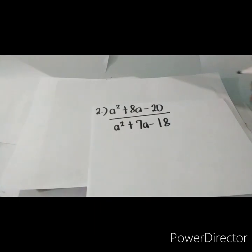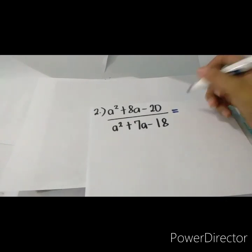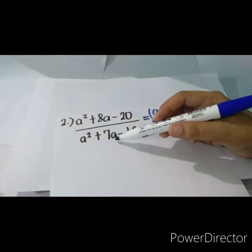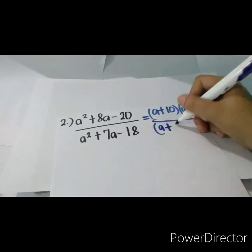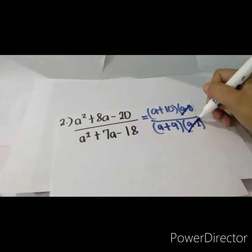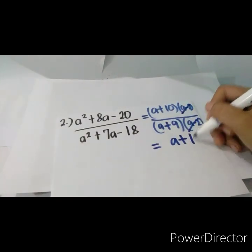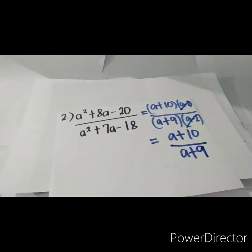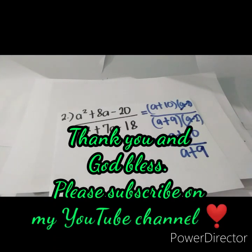The last example is (a squared + 8a minus 20) over (a squared + 7a minus 18). Find factors of negative 20 that sum to 8: positive 10 and negative 2, giving (a + 10)(a - 2). Find factors of negative 18 that sum to 7: positive 9 and negative 2, giving (a + 9)(a - 2). Cancel the common factor (a - 2). The final answer is (a + 10) over (a + 9). That's all for simplifying rational algebraic expressions with given monomials, binomials, and trinomials. Thank you and God bless.